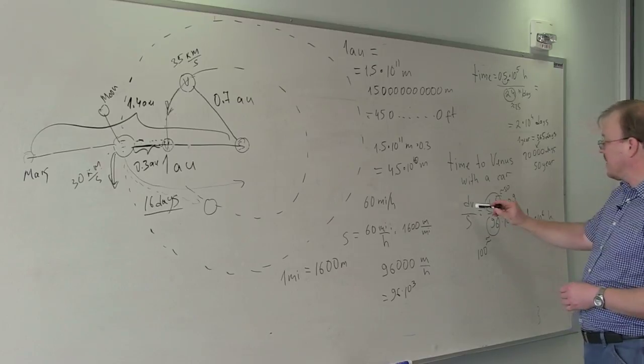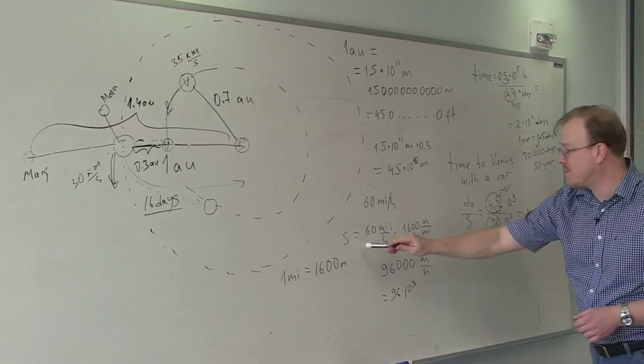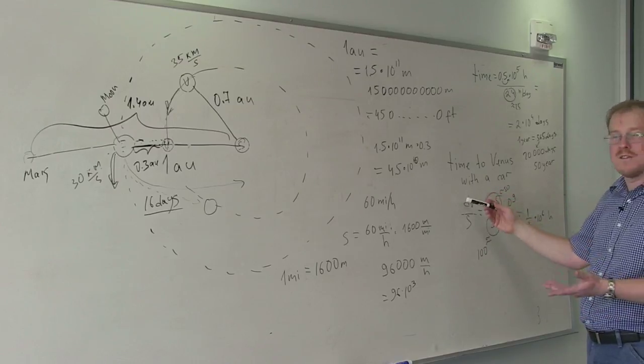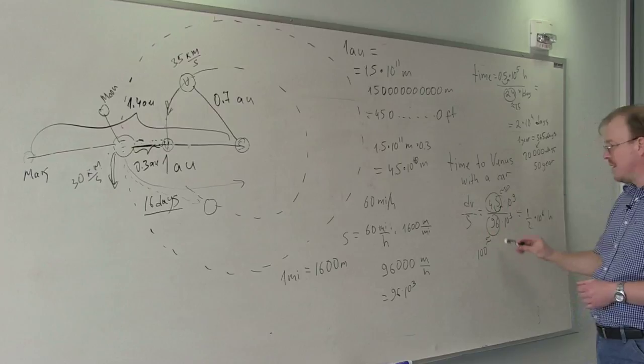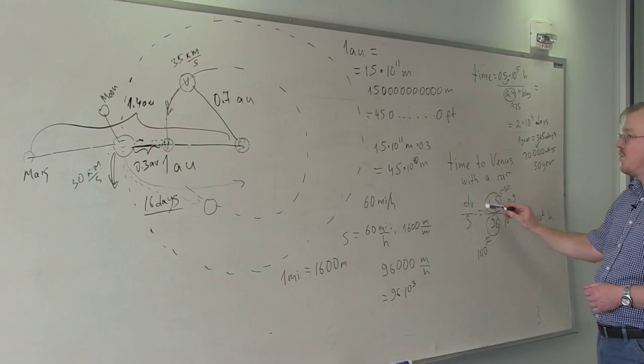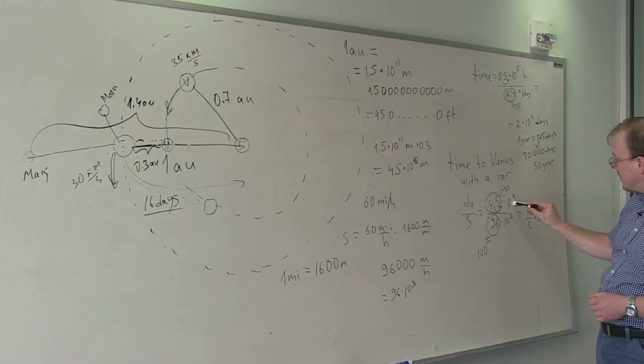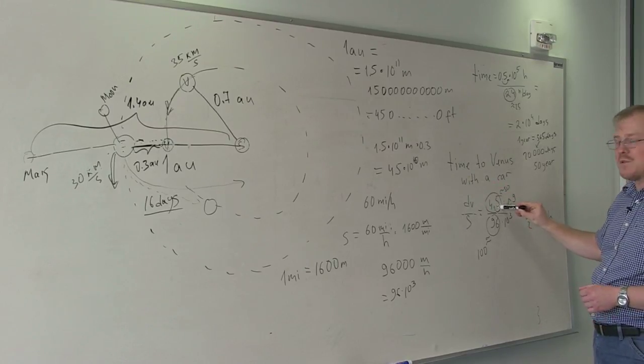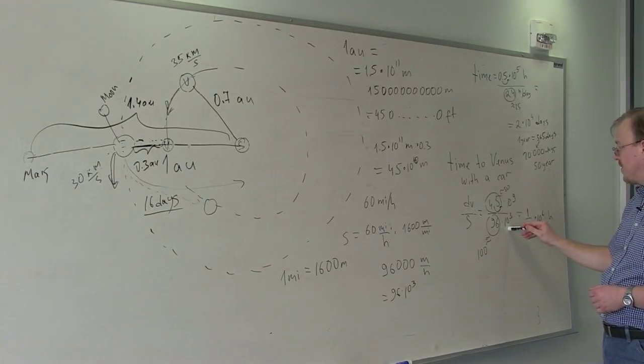If this is distance to Venus and this is our speed, then the time it will take us to travel to Venus is distance over the speed. So here we are plugging in our numbers: 4.5 times 10 to the 10. You notice there is 9 because we move the decimal point to the right. 96 times 10 to the 3.